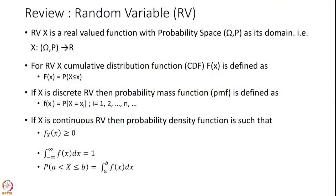Let us review what we did in the past. A random variable is defined as a real-valued function with probability space omega and P as its domain. There is always a cumulative distribution function, capital F of X, attached to any random variable X, defined as F of X equals the probability of X less than or equal to small x.